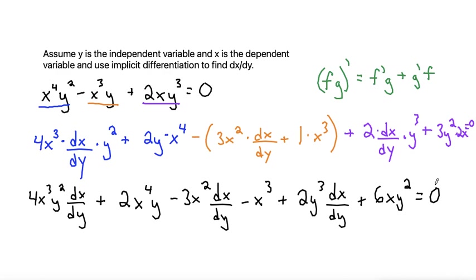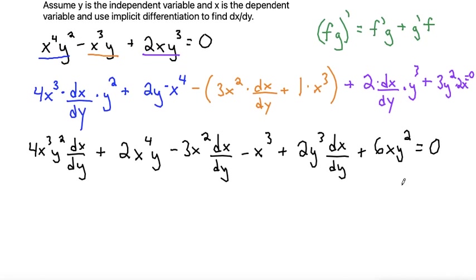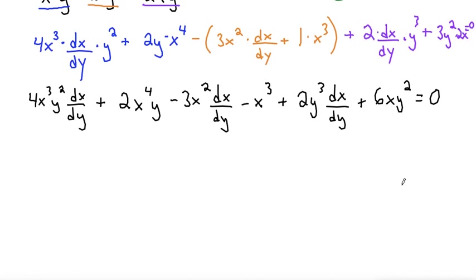From here to find dx/dy, now that we've taken all the derivatives and simplified a bit, we want to group all the terms with dx/dy on one side and put all the other terms onto the other side. So we have 4X cubed Y squared dx/dy.